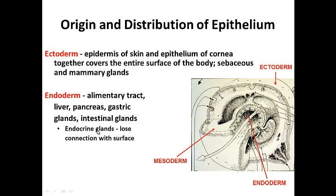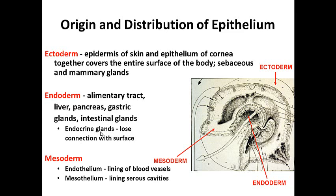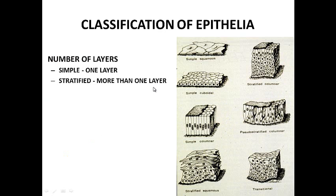Endocrine glands lose their connections to the surface and become secretions right into the connective tissue. The mesoderm in the middle is also important, and the epithelium in those locations have special names. Endothelium is what lines blood vessels — it is epithelium, but it's called endothelium. Mesothelium is what lines serous cavities. So where it comes from determines what type of structure is made.